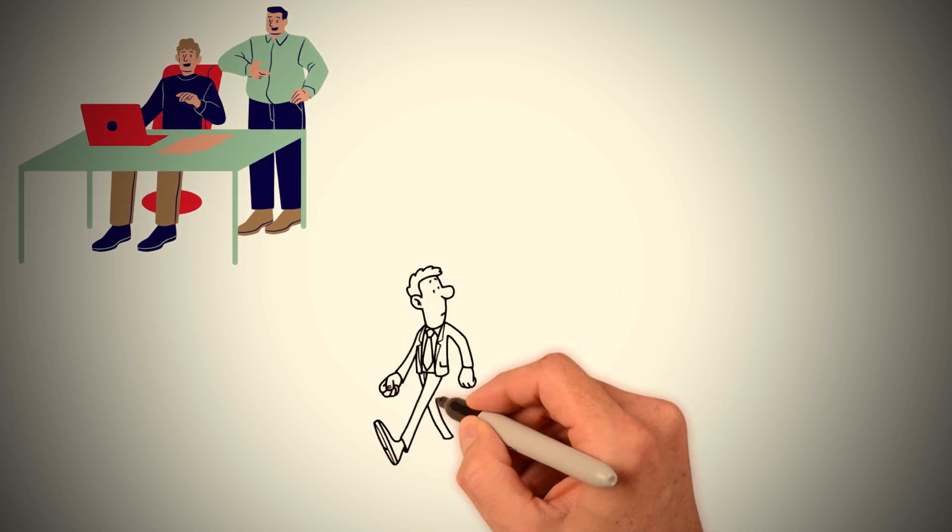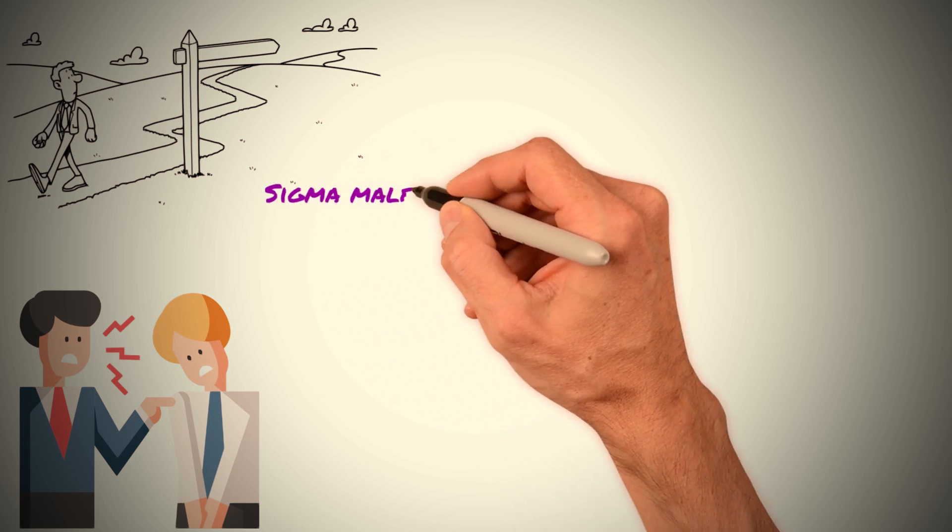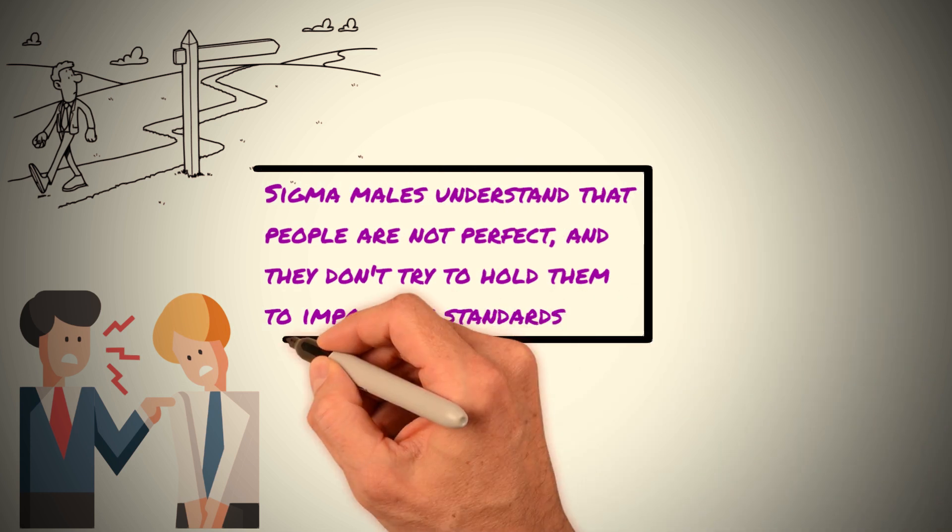They realize that everyone has their unique journey and experiences that shape them as individuals. They don't see a person's mistakes or shortcomings as a reflection of their worth or value as a human being. Sigma males understand that people are not perfect and they don't try to hold them to impossible standards.